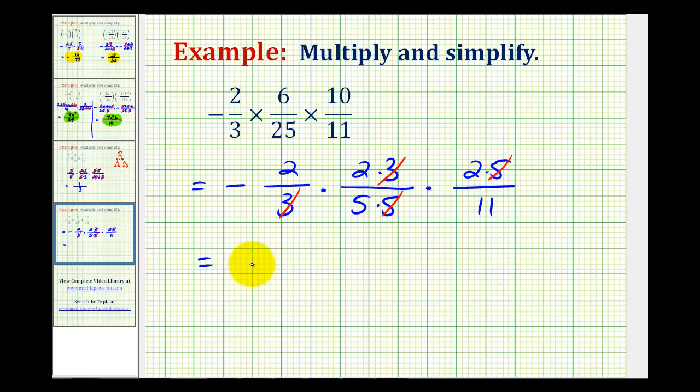We know this product will be negative. The numerator will be two times two times two, which is eight. And the denominator would be five times eleven, which is fifty-five. So here's our product.